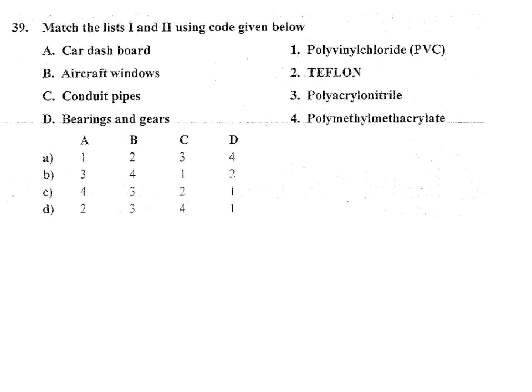Match list one and two: A) car dashboard, B) aircraft windows, C) conduit pipes, D) bearings and gears — matched with 1) polyvinyl chloride (PVC), 2) Teflon (PTFE), 3) polyacrylonitrile (PAN), 4) polymethyl methacrylate (PMMA). All four are thermoplastics made by addition polymerization. Thermosetting plastics, by contrast, are made by condensation polymerization.